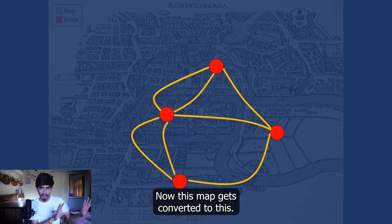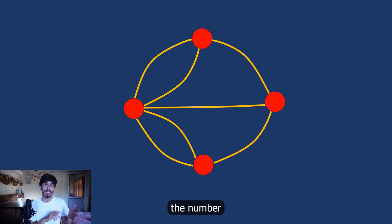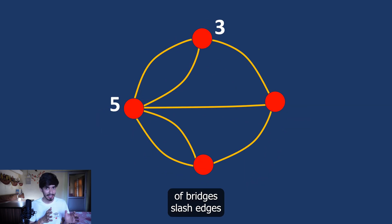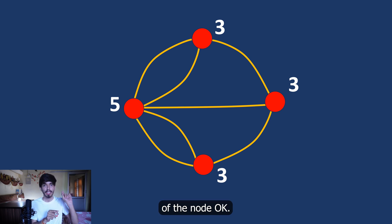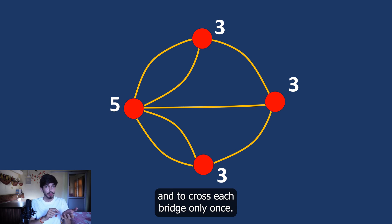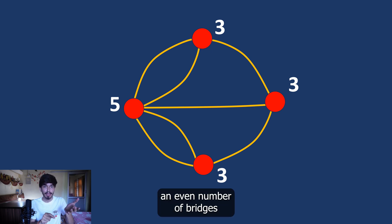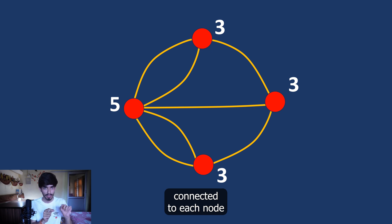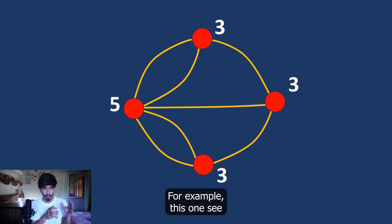Now let's count the number of bridges — or edges — connected to each node. This number is known as the degree of the node. To solve this puzzle and cross each bridge only once, there should be an even number of bridges connected to each node, except at the starting point or ending point.